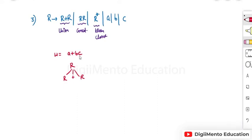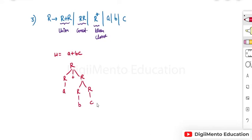Now there is bc, so we have to use the concatenation production — r and r. Now if we expand it to a, this to b, and this to c, so we are getting a plus bc. Now we have to check if we can get more than one parse tree for the same string.